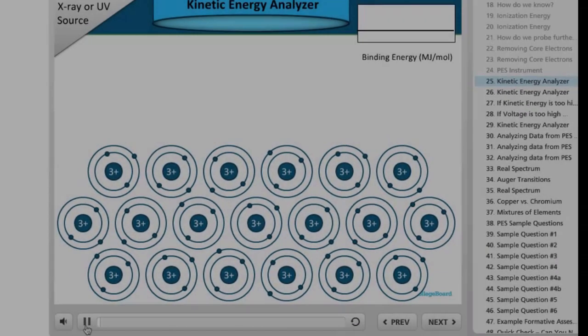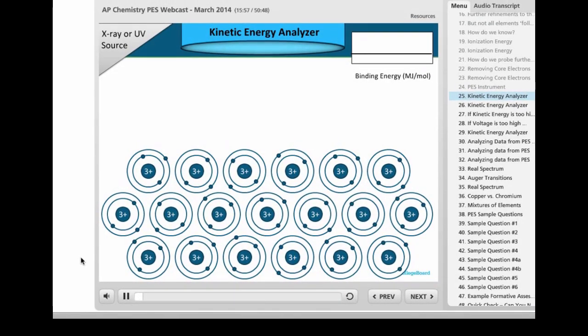I have here a sample of several atoms of the same element. And if you watch what happens during the radiation process, you can use this model to envision how the spectrum from PES is established. In order for a spectrum to be generated though, you need a large sample of atoms so that electrons from all energy levels can be analyzed.